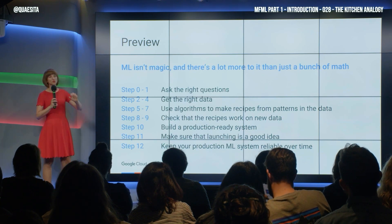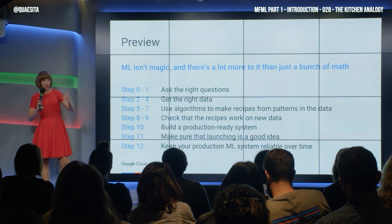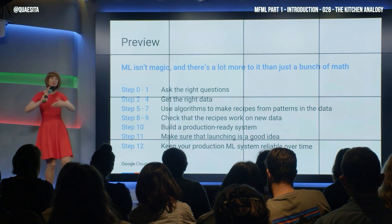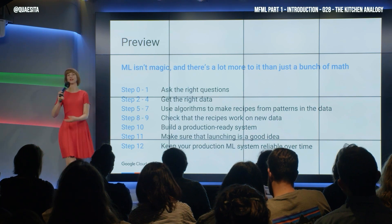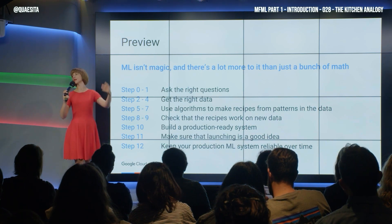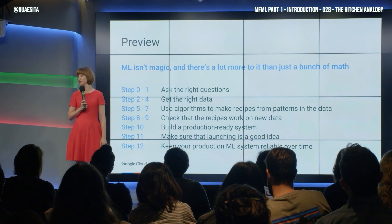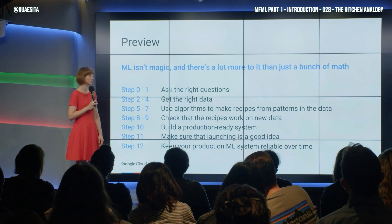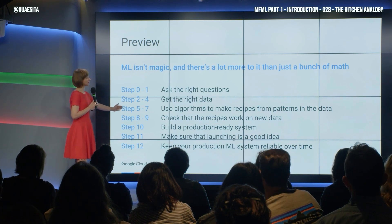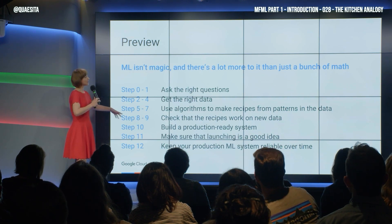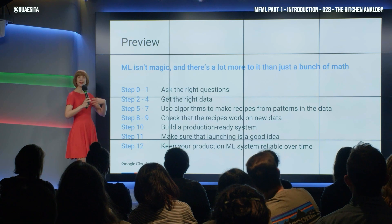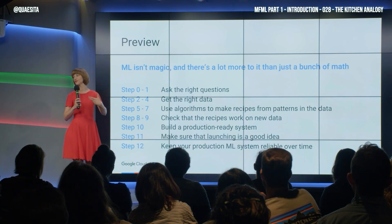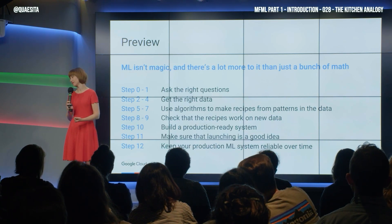So we're getting the ingredients, we're sourcing them, and ingredients matter — they matter a lot. Just because I have ingredients doesn't mean I'm going to be able to have my vegan sausage — certainly not. Steps five through seven: tinkering in the kitchen, trying different stuff, and iterating towards a better recipe.